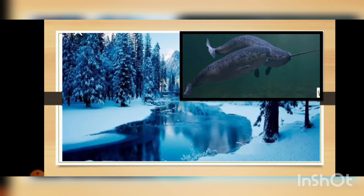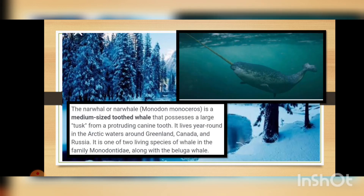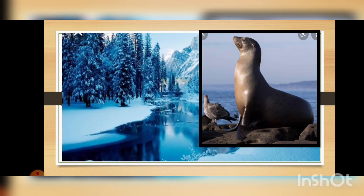The next animal is the narwhal, Monodon monoceros — a medium-sized toothed whale that possesses a large tusk from a protruding canine tooth. It lives in the arctic waters around Greenland, Canada, and Russia. It is one of the two living species of whale in the family Monodontidae, along with the beluga whale. Here is another picture of the narwhal — they are very well known for that long tusk they possess.